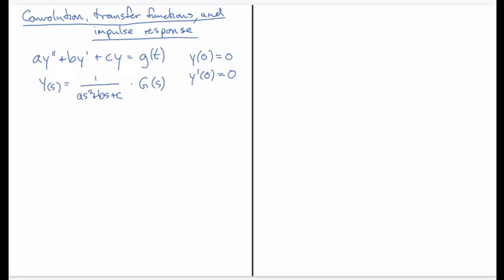And so this coefficient here, or this function that multiplies G of s, is referred to as the transfer function. So the transfer function H of s is 1 over as squared plus bs plus c.